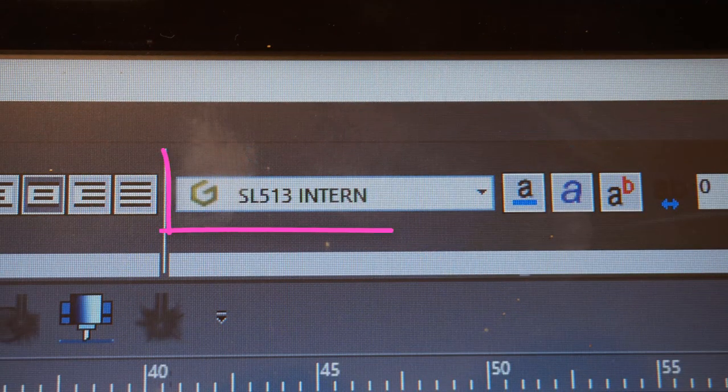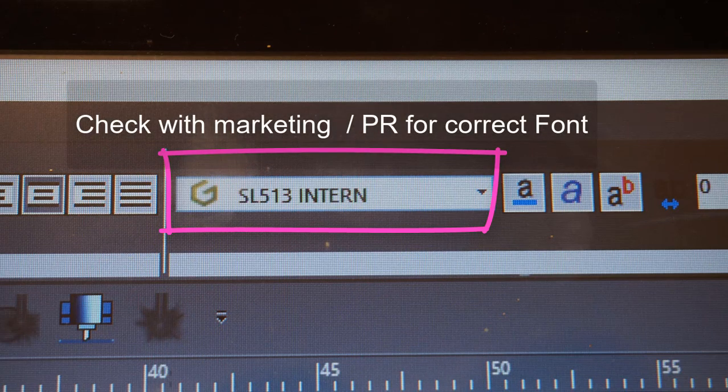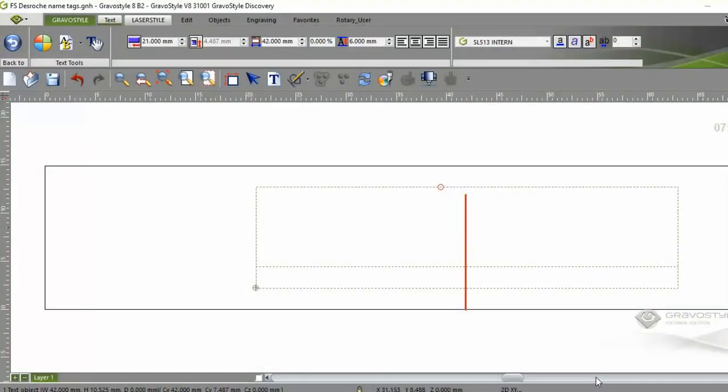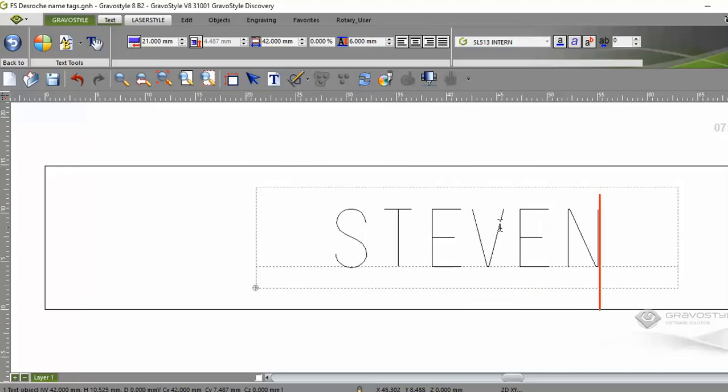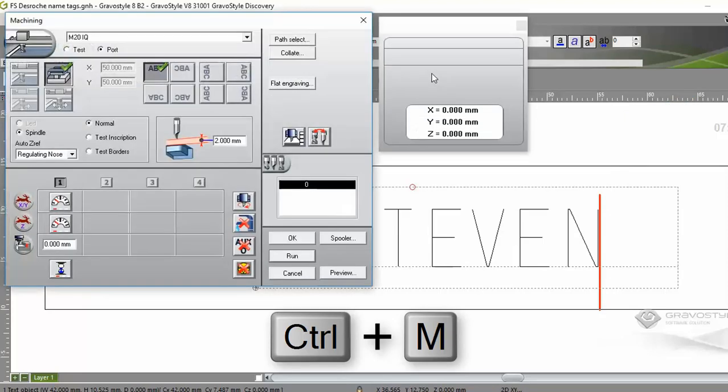Now setting the font is important. I used the SL513 intern which was listed on the instructions, but suggest you check which is the correct font with your marketing department. From your list of names type in the person's name. It automatically centres. We are now going to check the engraving instructions by pressing this engraving button or use control M.